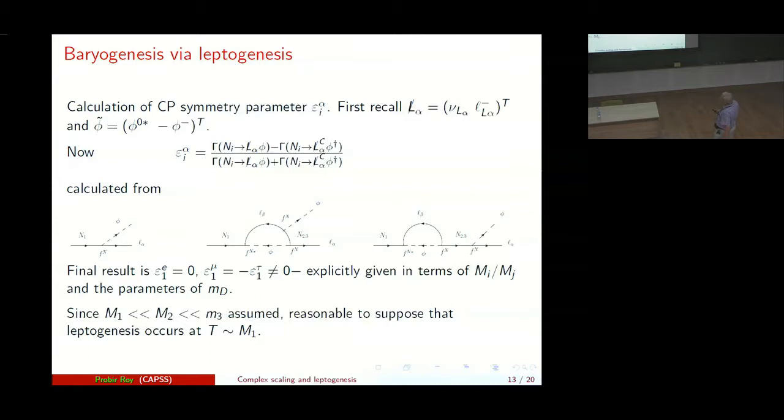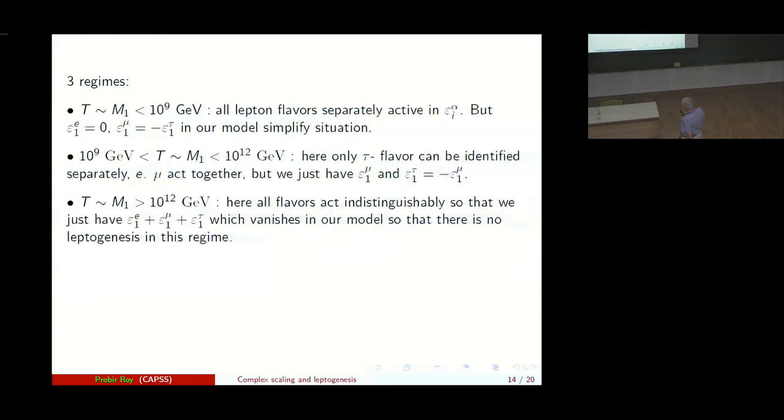So we assume that the right-handed neutrinos follow a hierarchy and it is therefore reasonable to suppose that leptogenesis occurs at a temperature of order M_1 and M_2 and M_3 are heavier. So there are three regimes for leptogenesis. One is when M_1 is less than 10 to the 9 GeV and one can show that all lepton flavors act separately in epsilon_I_alpha. But in our case epsilon_1E is 0 and epsilon_1_mu equals minus epsilon_1_tau.